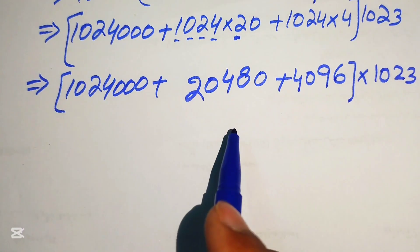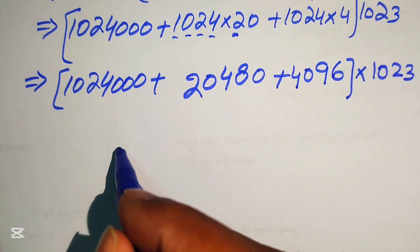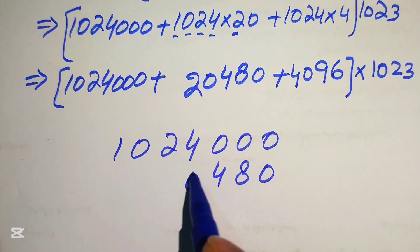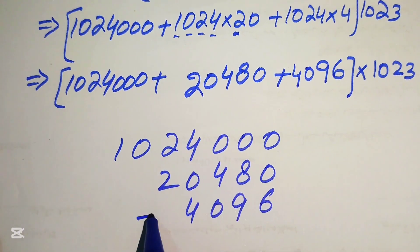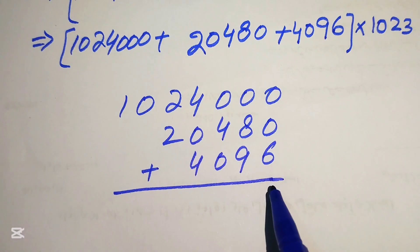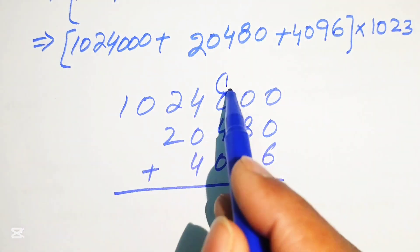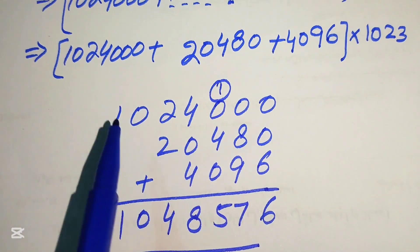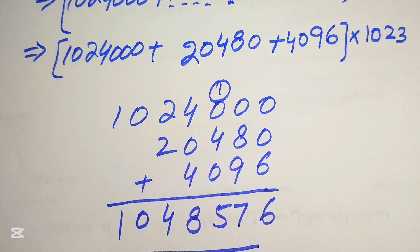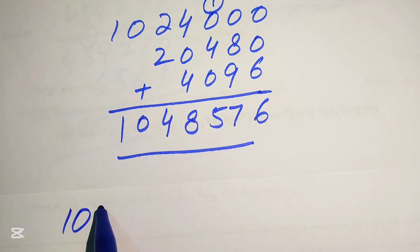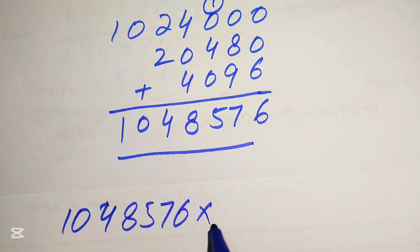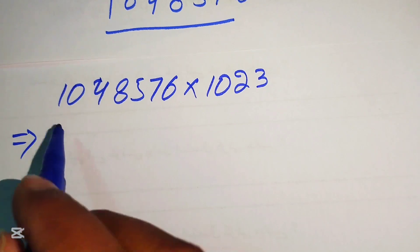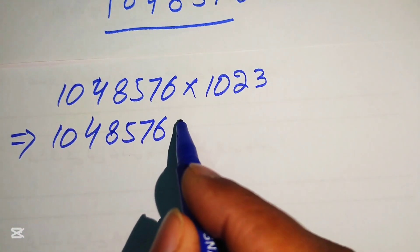We now add these three intermediate values using traditional column addition: 1024000, plus 20480, plus 4096. Adding column by column: 6, then 9 plus 8 is 17 (write 7 carry 1), 4 plus 1 is 5, 4 plus 4 is 8, 2 plus 2 is 4, 0, and 1 — giving the sum 1048576. This is multiplied by 1023.